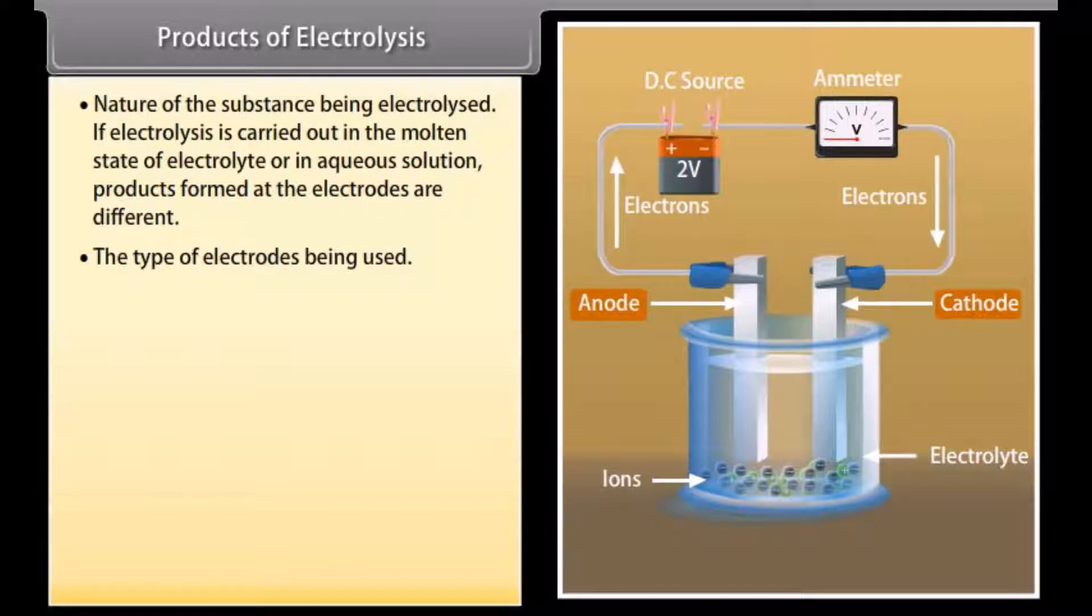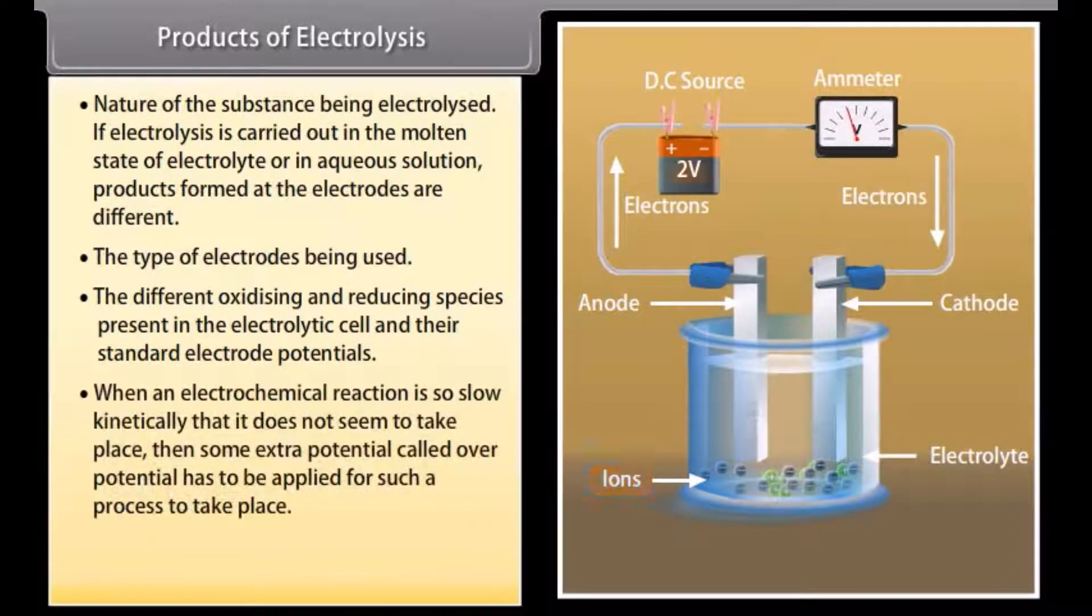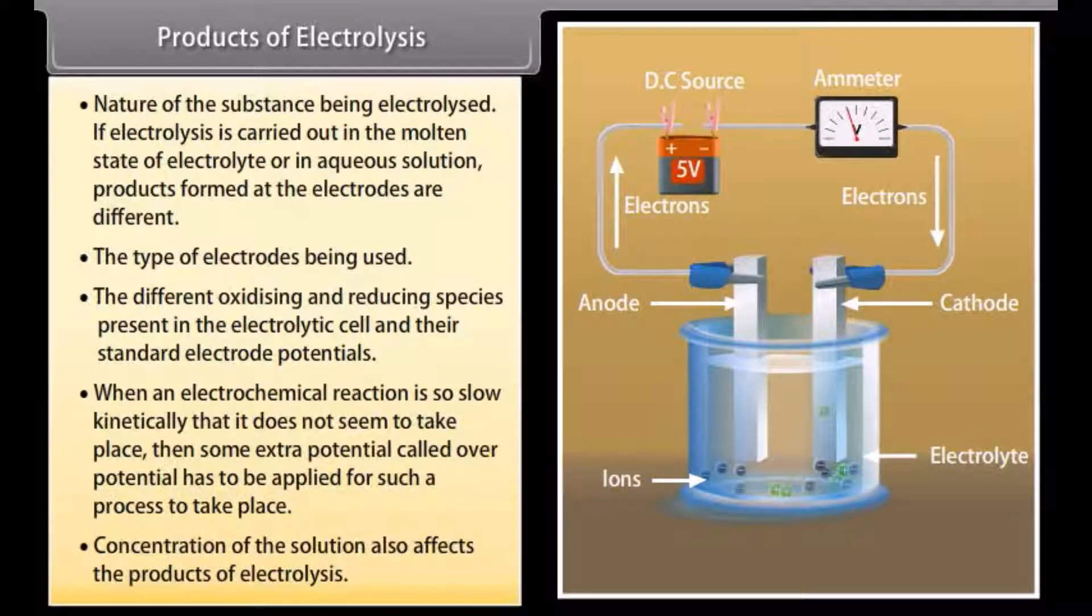Then, the products of electrolysis would be different. The different oxidizing and reducing species present in the electrolytic cell and their standard electrode potentials. When an electrochemical reaction is so slow kinetically that it does not seem to take place, then some extra potential called over potential has to be applied for such a process to take place. Concentration of the solution also affects the products of electrolysis.